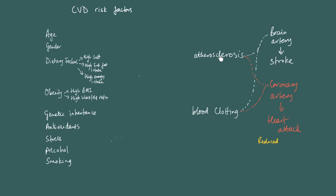However, if atherosclerosis or blood clotting happens in a coronary artery — an artery supplying the heart with oxygenated blood — it's going to result in cardiac cells, heart muscle cells, not having enough oxygen or glucose to carry out respiration. Any disturbance to heart tissue functioning we would term a heart attack.